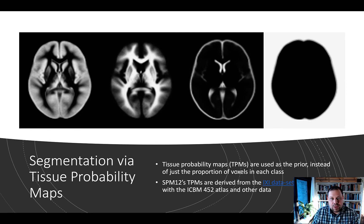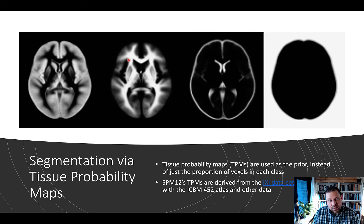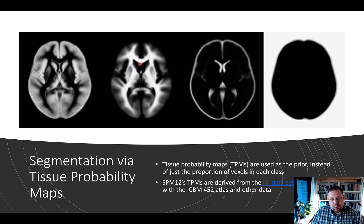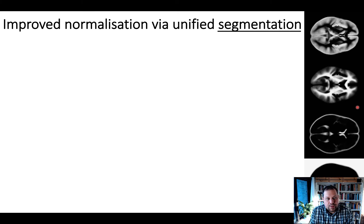We're using information from a large number of brains registered to common space to segment the brain into different types of tissue classes. During segmentation, each T1 anatomical image is also aligned into normalized space with these normalized templates, giving improved normalization. The model we're using is called unified segmentation.